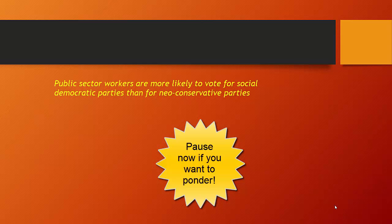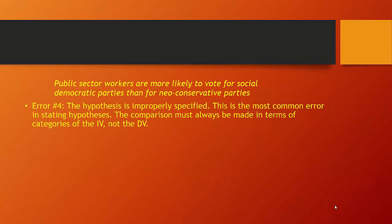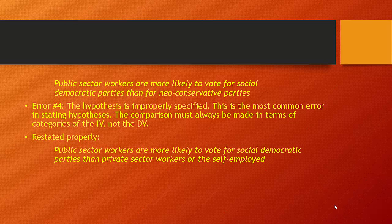Here's another one: 'Public sector workers are more likely to vote for social democratic parties than for neocon parties.' This is our fourth error — hypotheses being improperly specified. The problem is that someone has created this hypothesis in terms of categories of the dependent variable. Remember, you need to specify the categories of your independent variable and only specify the category of your dependent variable you expect to be most or least likely. So restated properly: public sector workers are more likely to vote for social democratic parties than private sector workers or the self-employed. Public sector workers, private sector workers, and the self-employed are all categories of the independent variable, and the probability of voting social democratic is the dependent variable we're observing.